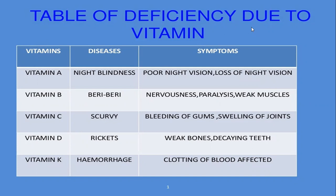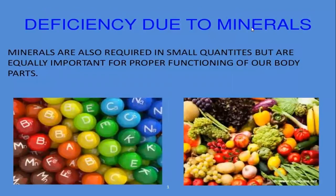Let's read one by one. Vitamin A deficiency causes night blindness — symptoms are loss of night vision. Vitamin B deficiency causes beriberi — symptoms are nervousness, paralysis, weak muscles, etc. Vitamin C deficiency causes scurvy, which is bleeding of the gums. Vitamin D deficiency causes rickets, meaning weak bones and decaying teeth. Vitamin K deficiency causes hemorrhage, where clotting of blood is affected. These are the diseases caused if we are not taking vitamins in our diet, so it is very important to take vitamins.